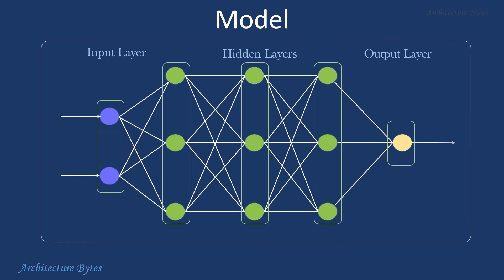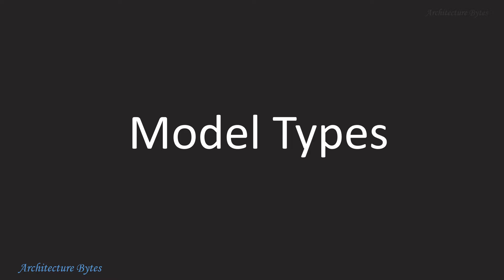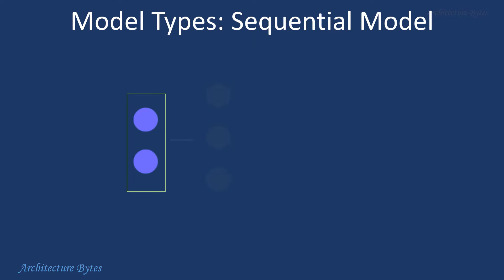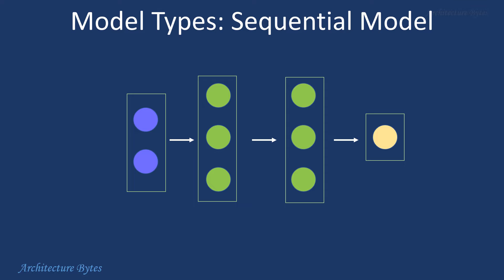A model refers to the overall architecture or structure of the network. It defines how the layers and neurons are organized and connected. This is a sequential model, a linear stack of layers. They are used in feed-forward neural networks where data passes through the layers in one direction. They are relatively easy to create.